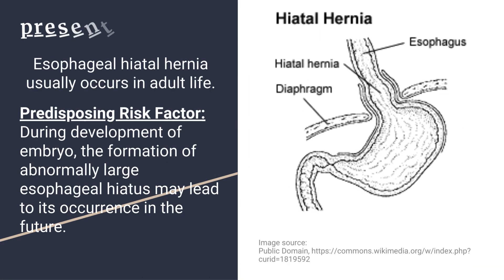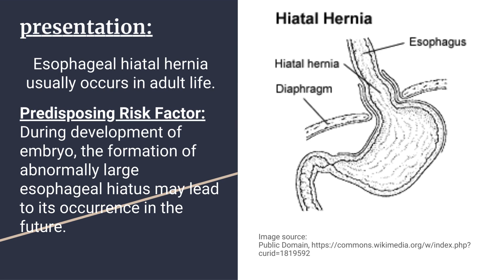In which part of life does it occur? Esophageal hiatal hernia usually occurs in adult life. An important predisposing risk factor is during development of the embryo: the formation of an abnormally large esophageal hiatus may lead to its occurrence in the future.